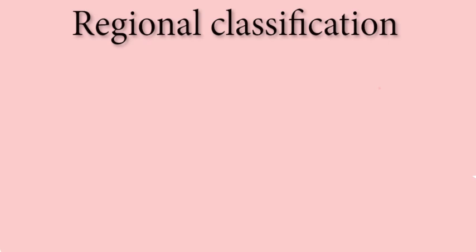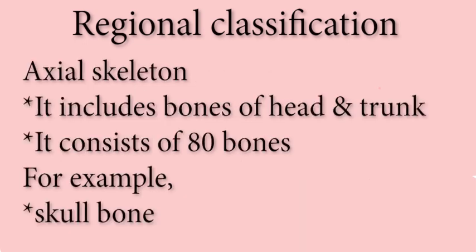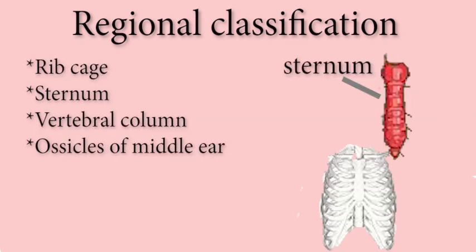Now let's move to regional classification of bones. It is further divided into two groups: axial skeleton and appendicular skeleton. The axial skeleton includes bones of the head and trunk, and consists of 80 bones. For example, skull bone, ribcage, sternum, vertebral column, and ossicles of the middle ear.